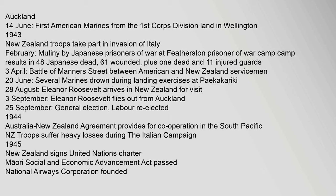The threat is eased after the Battle of the Coral Sea. New Zealand troops in 1st and 2nd Battles of El Alamein. Food rationing introduced. Mobilisation of women for essential work. 12 June: First 5 ships of American troops from the 37th U.S. Army Division land in Auckland. 14 June: First American Marines from the 1st Marine Corps Division land in Wellington. 1943: New Zealand troops take part in the invasion of Italy. February: Mutiny by Japanese prisoners of war at Featherston Prisoner of War Camp results in 48 Japanese dead, 61 wounded, plus 1 dead and 11 injured guards.